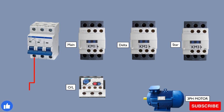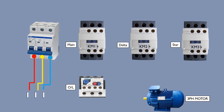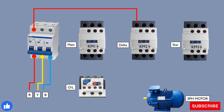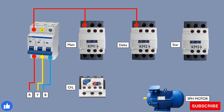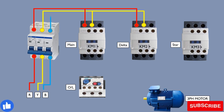First of all we take a three-phase supply from a source — R, Y and B. Then we will take out power from the breaker to the contactors in delta and main. Red is completed, then yellow is completed, and then blue is also completed.